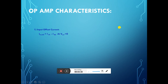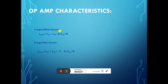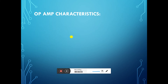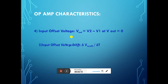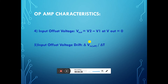The first characteristic of an operational amplifier is input offset current — the difference between the input currents such that the output voltage equals zero. Next is input bias current — the average of the currents applied such that the output voltage equals zero. Next is input offset current drift — the change in input offset current with respect to change in temperature. Next is input offset voltage — the potential difference between input voltages such that the output voltage equals zero. Next is input offset voltage drift — the ratio of change in input offset voltage to change in temperature.